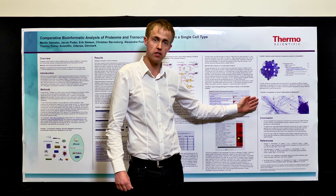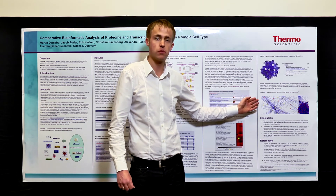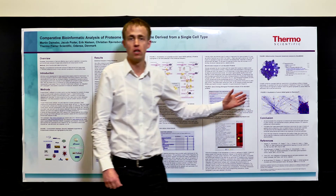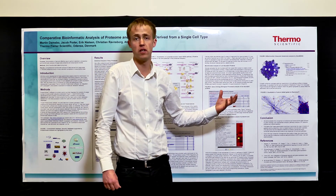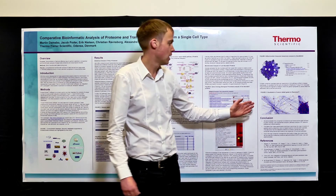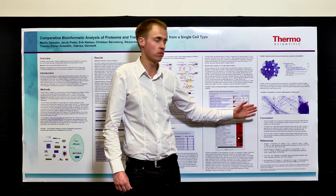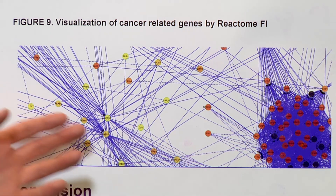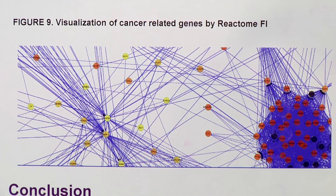The last figure on this poster displays a plugin in Cytoscape that allows linking of pathway association to disease states. This is a cancer disease state where proteins closely associated with cancer are colored yellow and those that are not are colored red. This gives you an idea about the proteins you have identified and their relative association to a disease state.